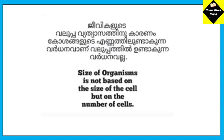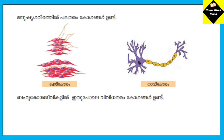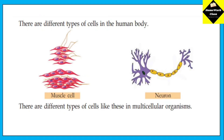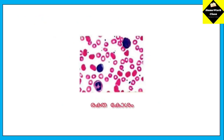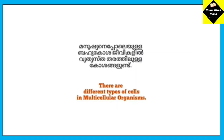The size of the organism is not based on the size of the cell, but on the number of cells. This is the human body — there are different types of cells in multicellular organisms.